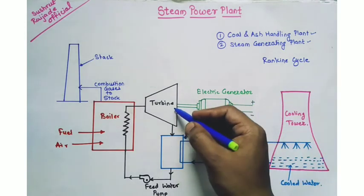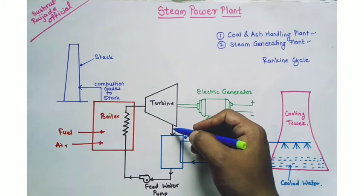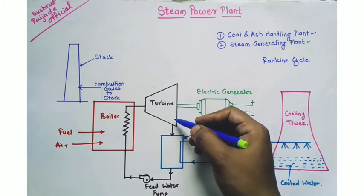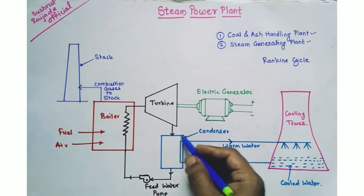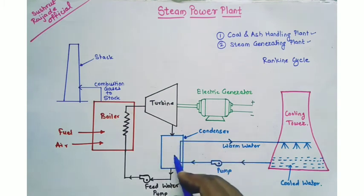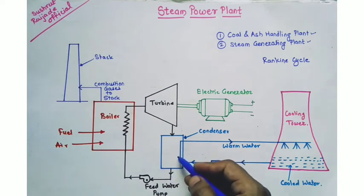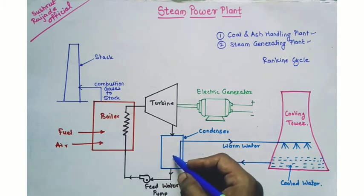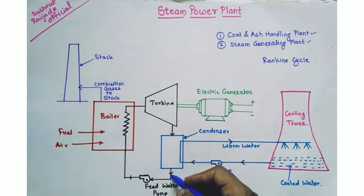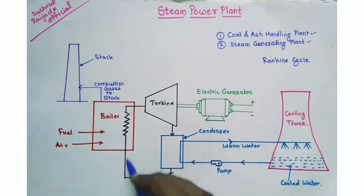The steam extracted from the turbine after use is then passed towards the condenser. In the condenser, the steam gets condensed — that means the steam is converted into water through heat exchange with cold water. That condensed water is then fed back to the boiler with the help of a feed water pump.